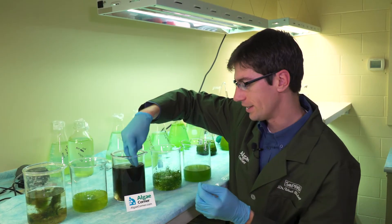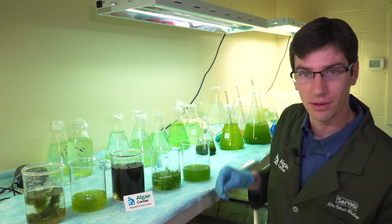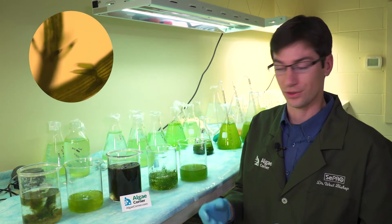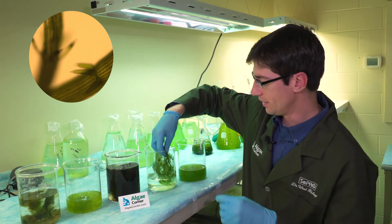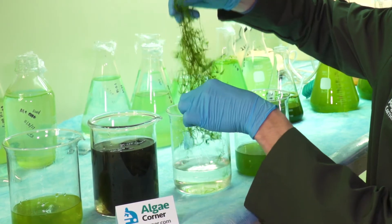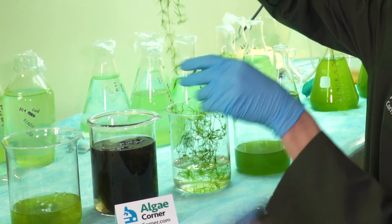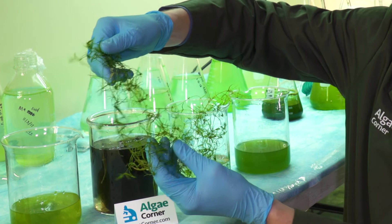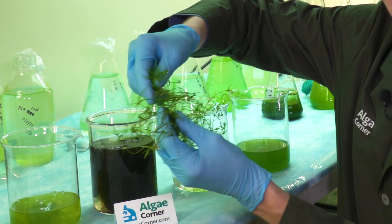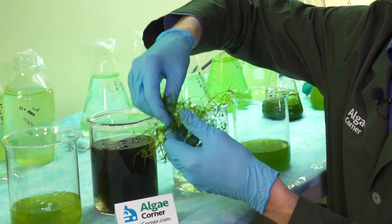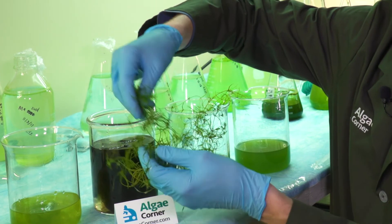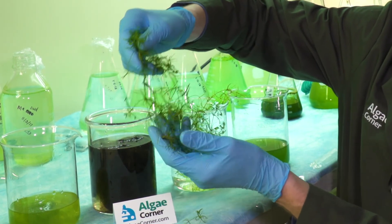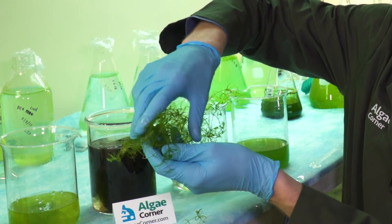Another common type of algae you may identify just by grabbing it is Chara. This is a type of macroalgae. Here you can see it often grows up from the bottom of the pond like a macrophyte or land plant, but this is truly a type of algae—it doesn't have any true roots, stems, or leaves. Also, if you get in and smell this one, it typically smells like skunk or garlic. Some people describe it as musk grass, which is a common name for Chara.